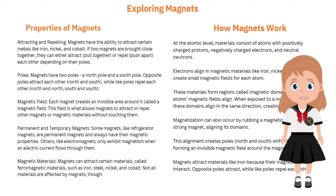Magnetic field: each magnet creates an invisible area called a magnetic field around it. This field allows magnets to attract or repel other magnets or magnetic materials without touching them.